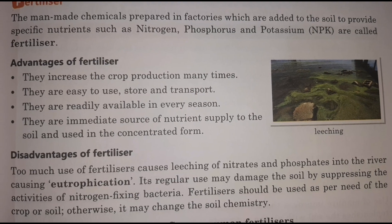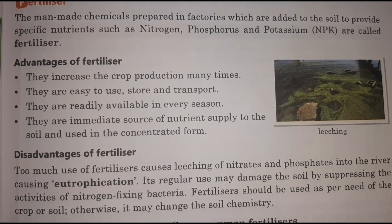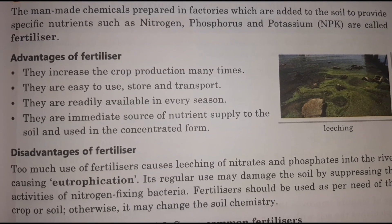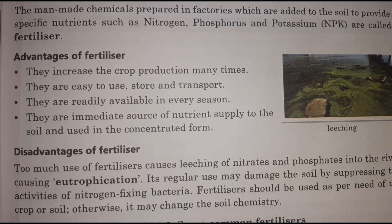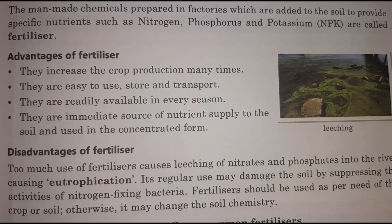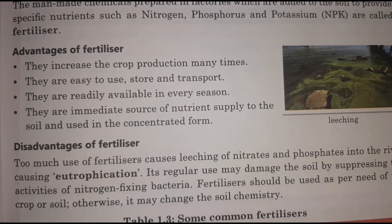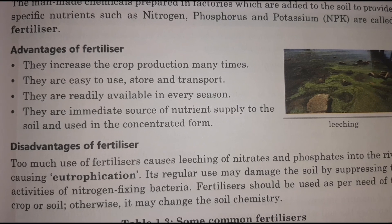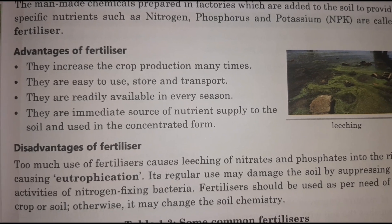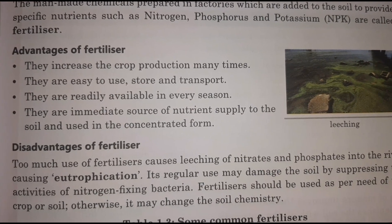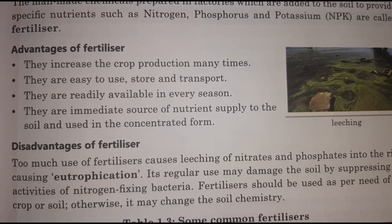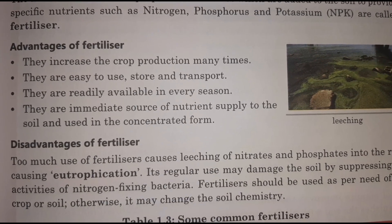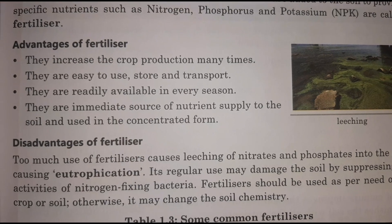The man-made chemicals prepared in factories which are added to the soil to provide specific nutrients such as nitrogen, phosphorus, and potassium are called fertilizers. Advantages of fertilizers: they increase crop production many times, they are easy to use, store and transport, they are readily available in every season, and they are an immediate source of nutrients supplied to the soil.